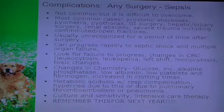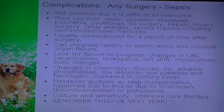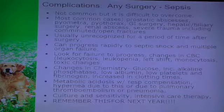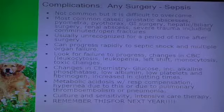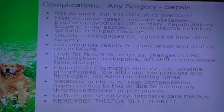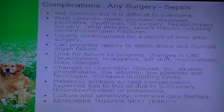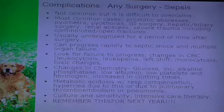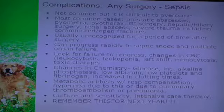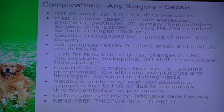Sepsis is not common, but once you get it, it's hard to fix. These patients usually deteriorate and die. The most common cases involve prostatic abscesses, pyometra, pyothorax, GI surgery with dehiscence or pre-existing contamination, hepatic or biliary surgery, renal abscesses, and severe trauma including comminuted and open fractures. One case involved a cat mauled by a dog - its fat became so traumatized that it turned necrotic, was debrided, and the cat became septic even without significant internal wounds.